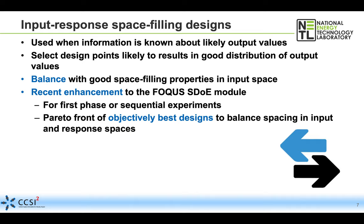Phase three employs input response space filling designs. We use these when we know some information about what likely output values are going to result from particular combinations of inputs — that allows us to select design points that are likely to result in a good distribution of the output values. Input response space filling designs look to balance good space filling properties in both the input space and the output space, providing the experimenter with a collection of objectively best designs that move across a spectrum from balancing space fillingness in the input and response spaces.